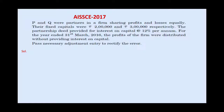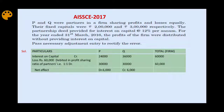Let us look at a 2017 board question. P and Q were partners in a firm sharing profits and losses equally. Their fixed capitals were 2 lakh and 3 lakh respectively. The partnership deed provided for interest on capital at 12% per annum. For the year ended 31st March 2016, the profit was distributed without providing interest on capital. So we calculate: 12% of 2 lakh = 24,000 for P, and 12% of 3 lakh = 36,000 for Q. Total interest = 60,000.